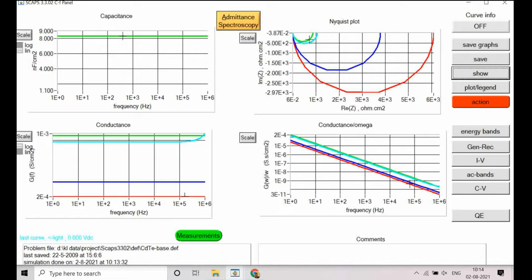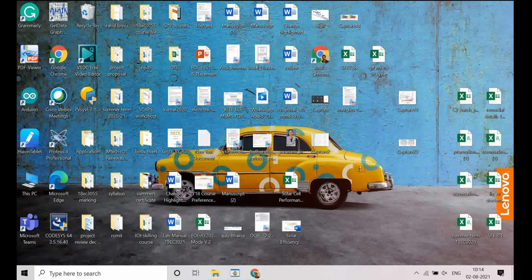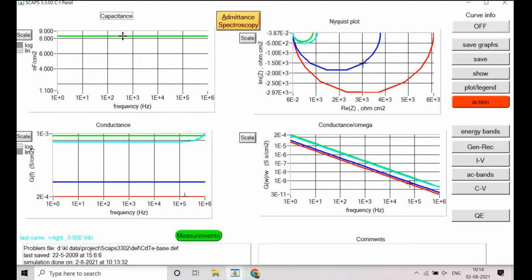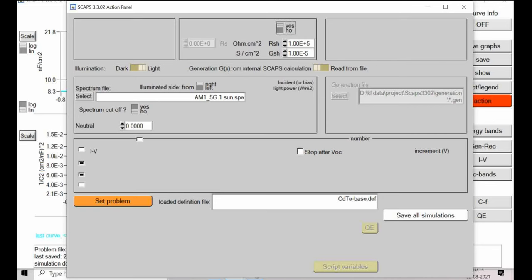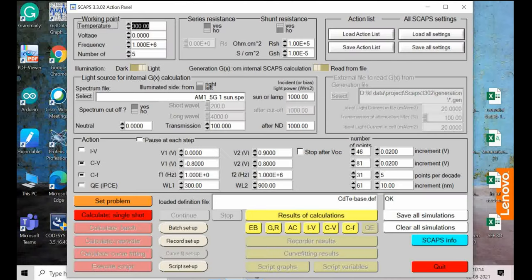And then we will get this Nyquist plot variation is clearly visible here. Similarly other variation with different defect density, with different sort of temperature variation or voltage variation or frequency variation. So all those variation can be observed and perfect type of behavior can be observed.